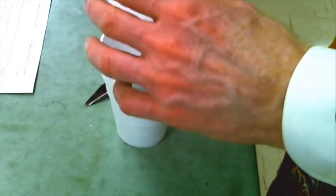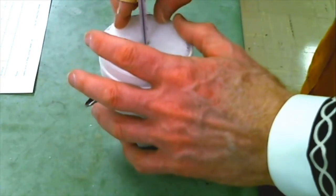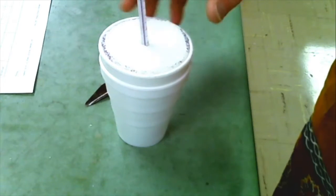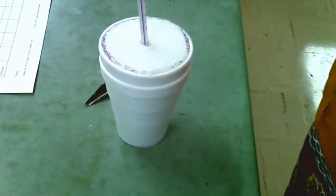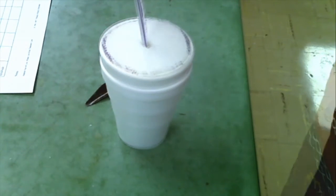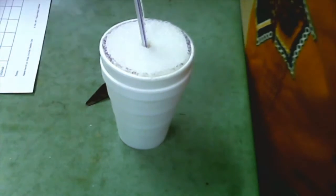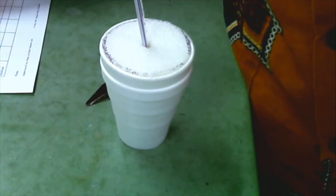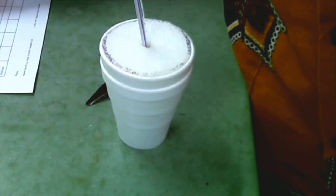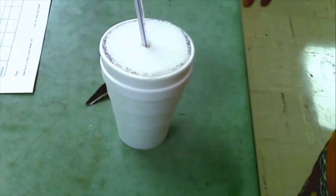We're going to find the initial temperature of the water. 21.1 degrees. Now we add the Epsom salt to the water.